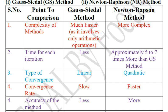Friends, first point is the complexity of method. This is much easier in Gauss-Siedel method because it involves only arithmetic operations. But in case of Newton-Raphson method, this is more complex.